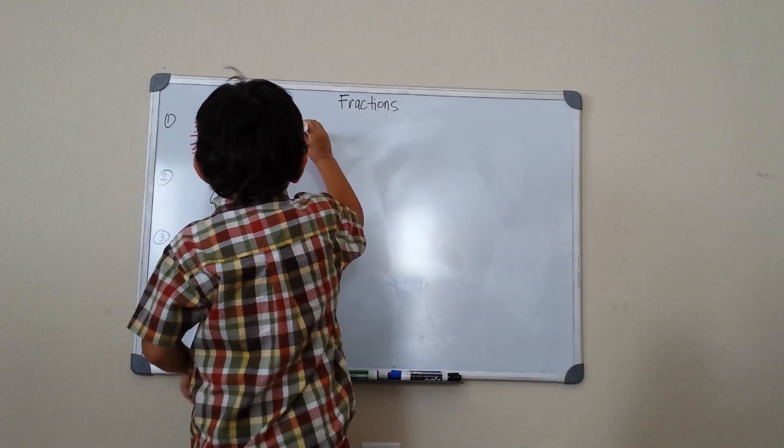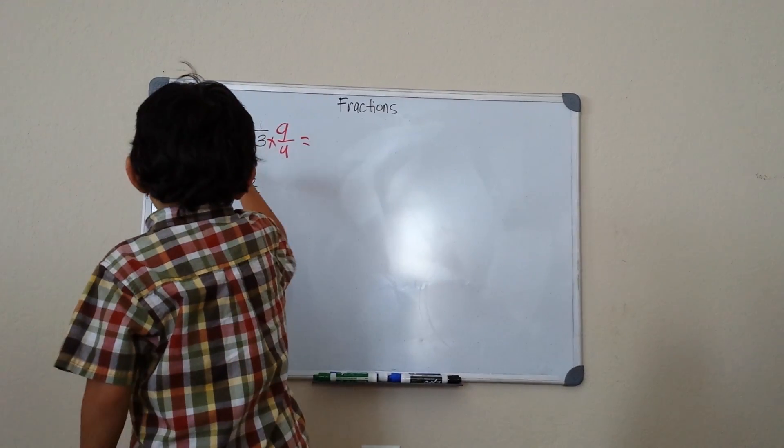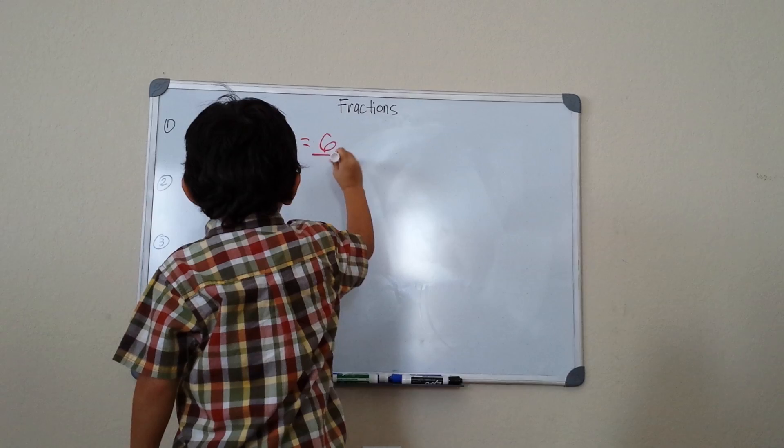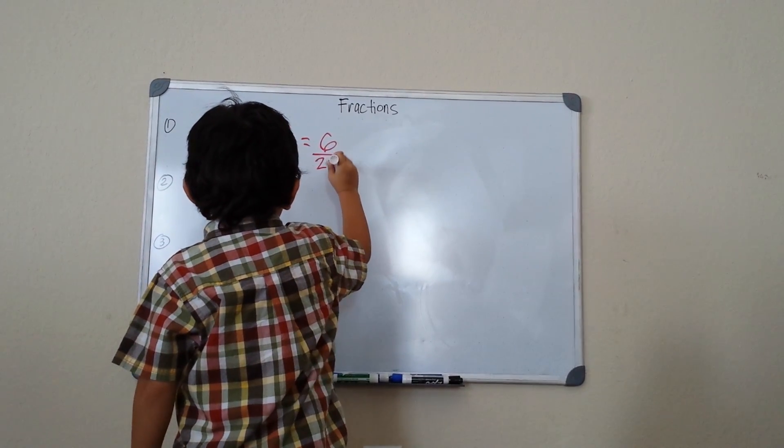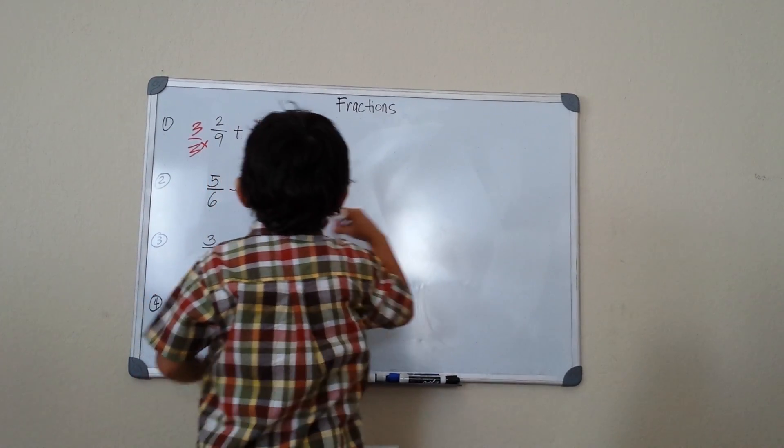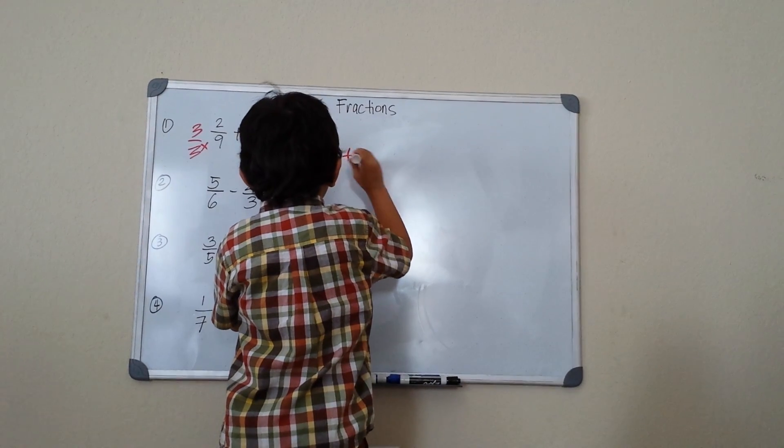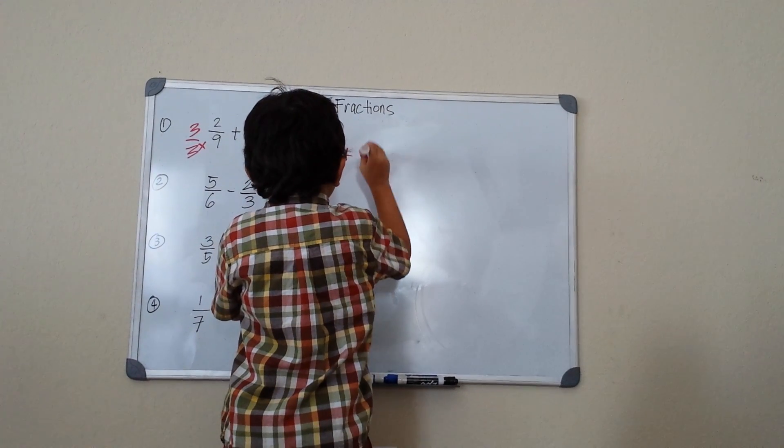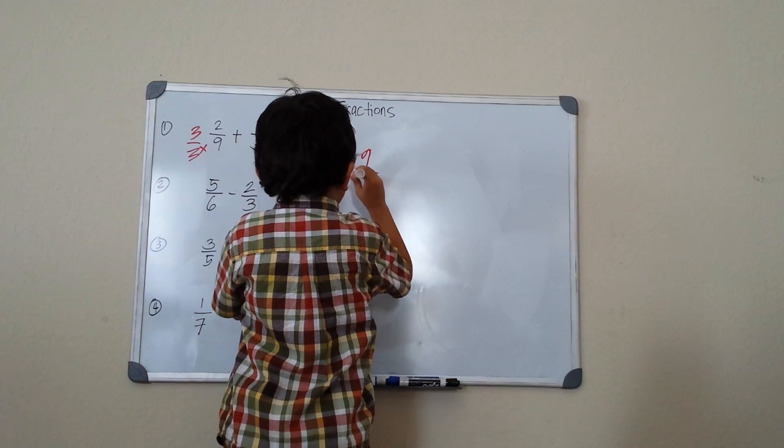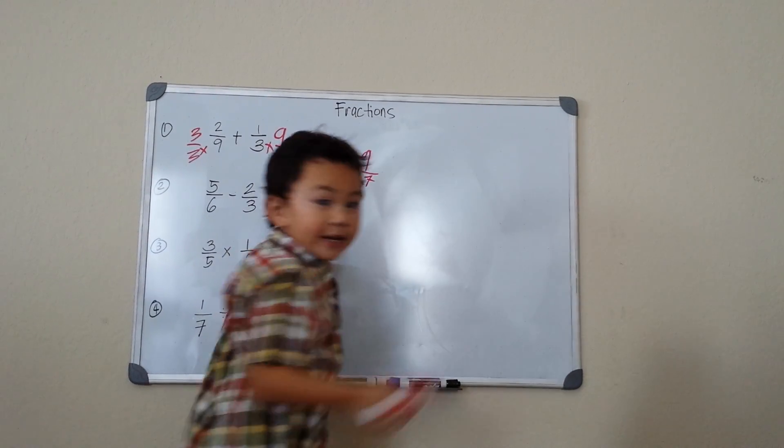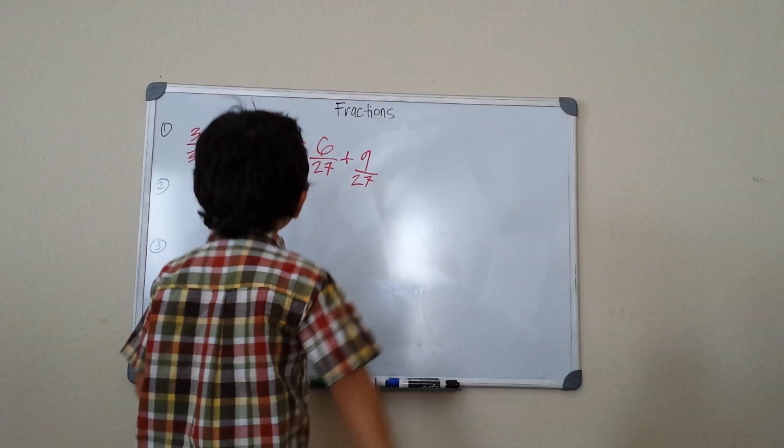It becomes 3 times 2 over 27, which is 6/27, plus 1 times 9 is 9/27. Now we have the same denominator.